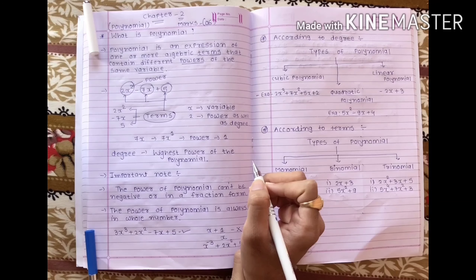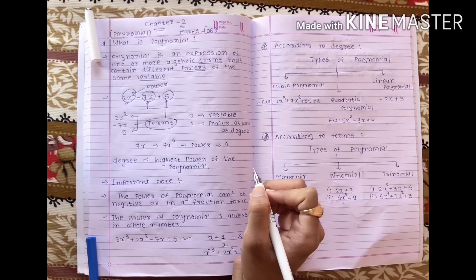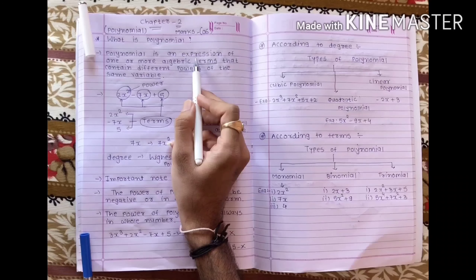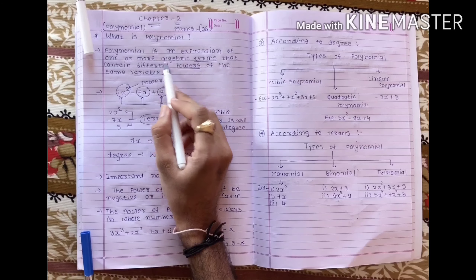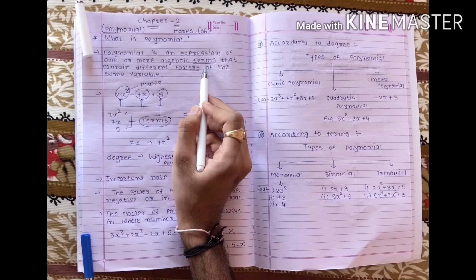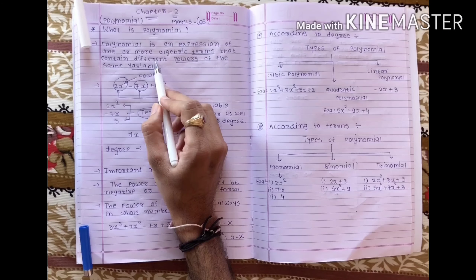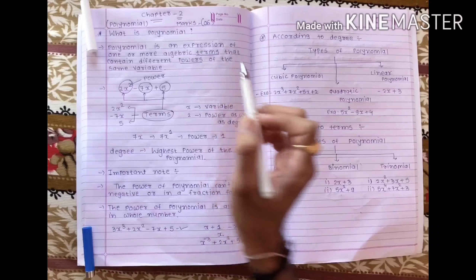First of all, what is the meaning of polynomial? Polynomial is an expression of one or more algebraic terms that contain different powers of the same variable.